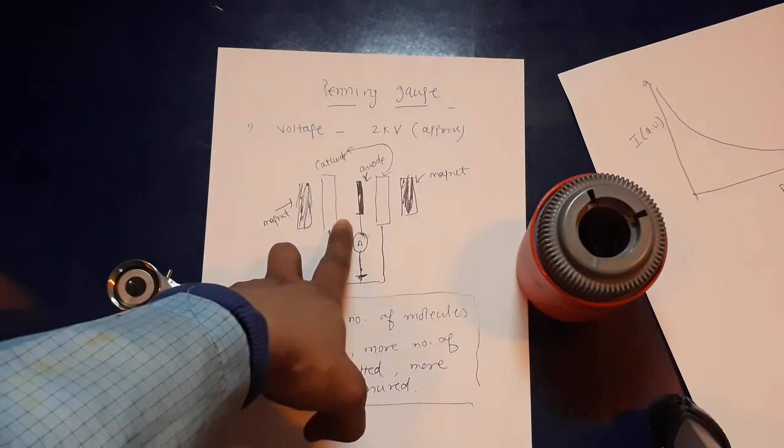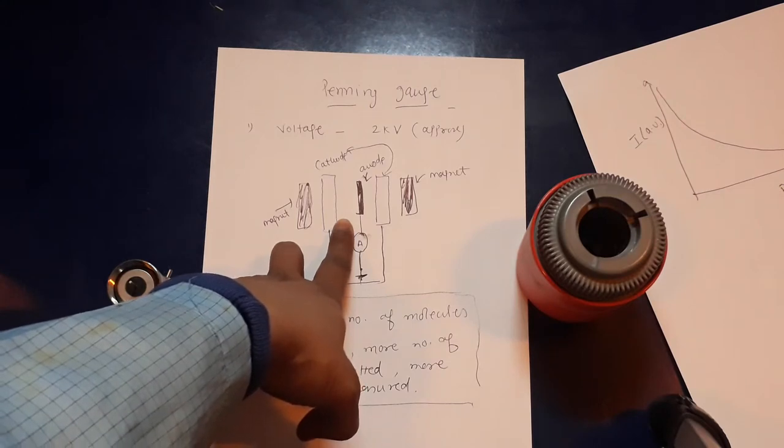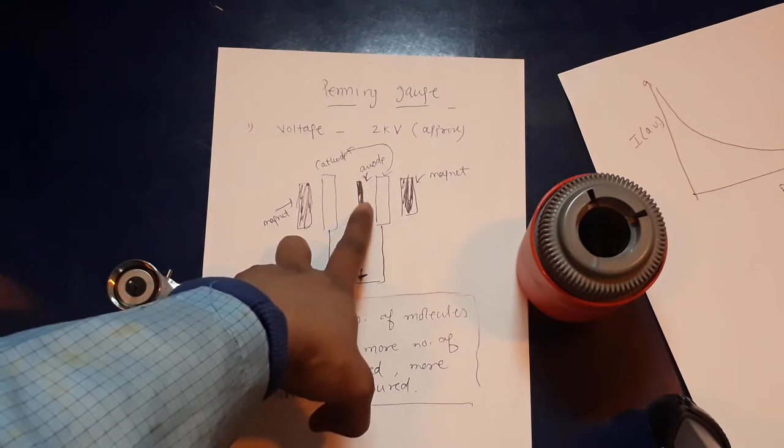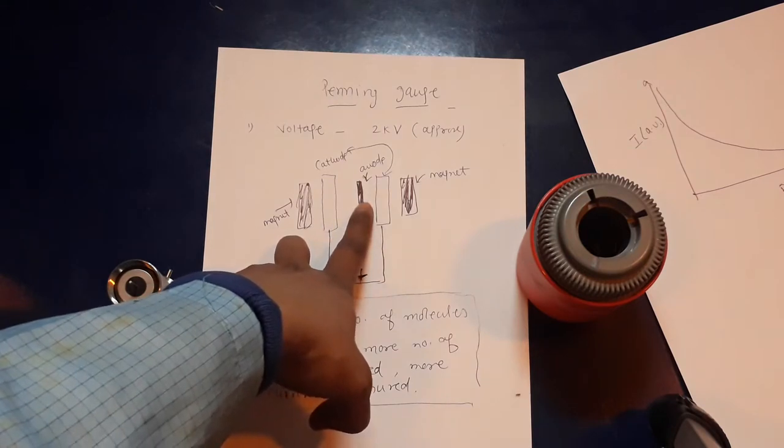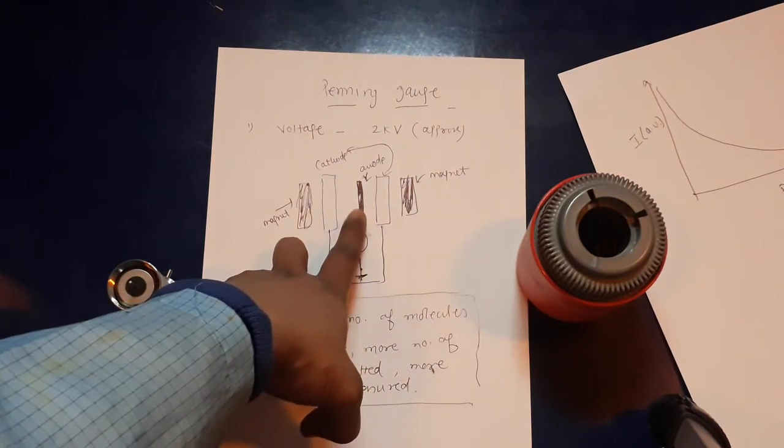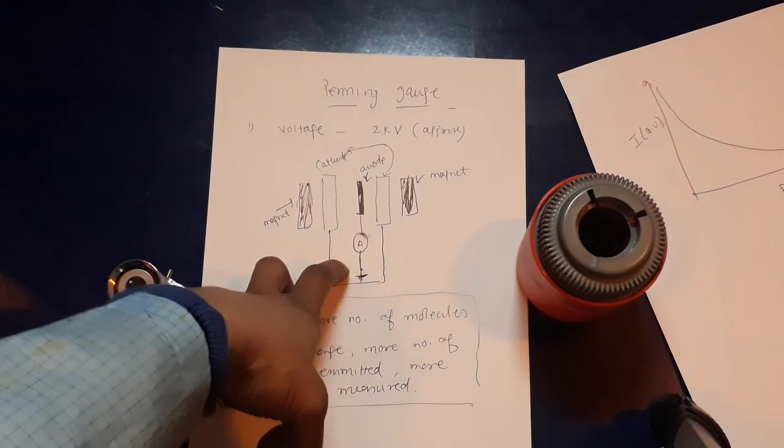The discharge will happen and then the electrons, because of the, let's say it was argon, argon becomes argon positive and electron. The electron will be accelerated to the anode and it is connected to a meter, and that way you can measure the current.